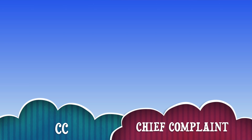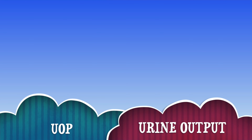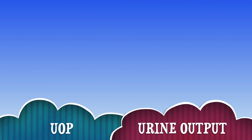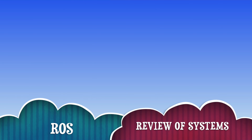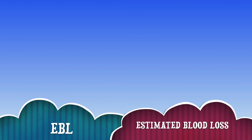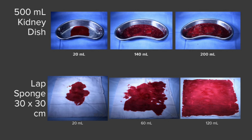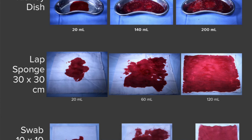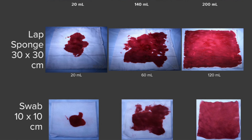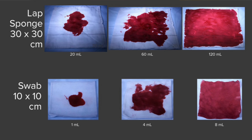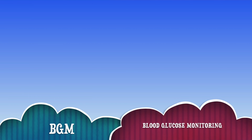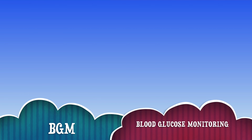UOP means Urine Output. ROS stands for Review of Systems. EBL means Estimated Blood Loss — if a patient has gone through surgery, you might see EBL in the surgical summary, so don't be confused; it just means estimated blood loss.